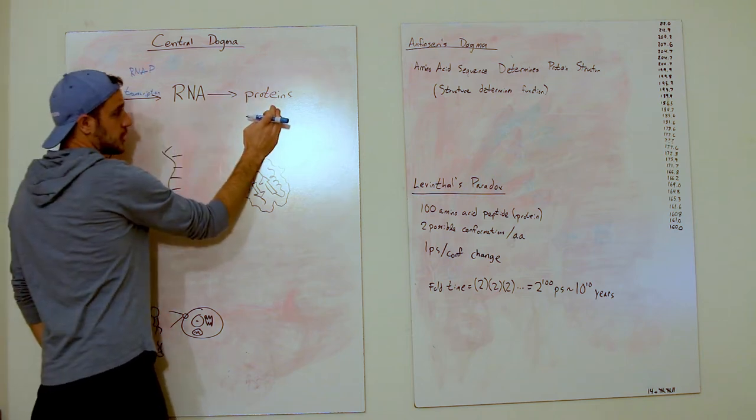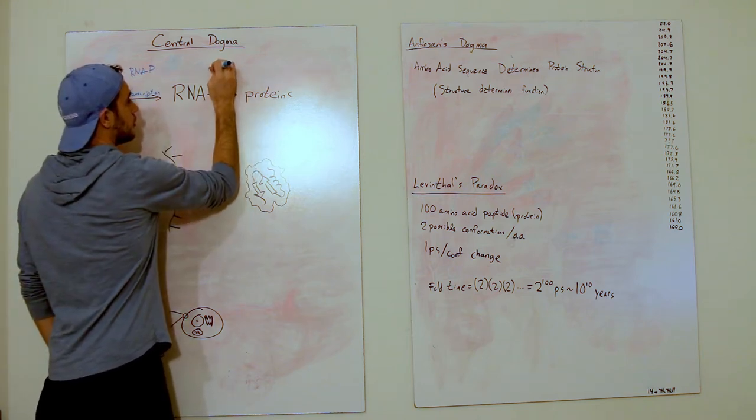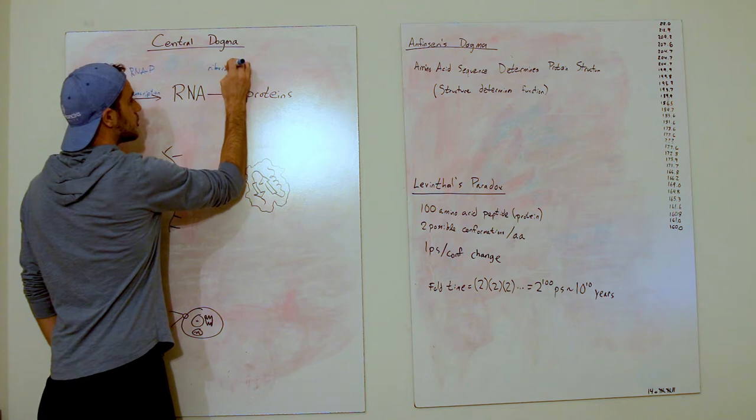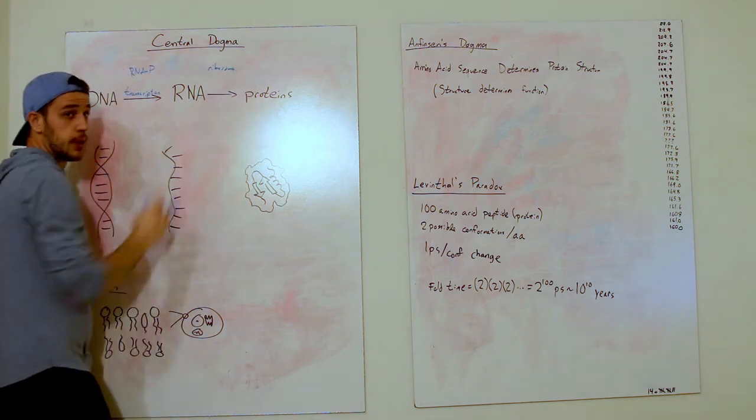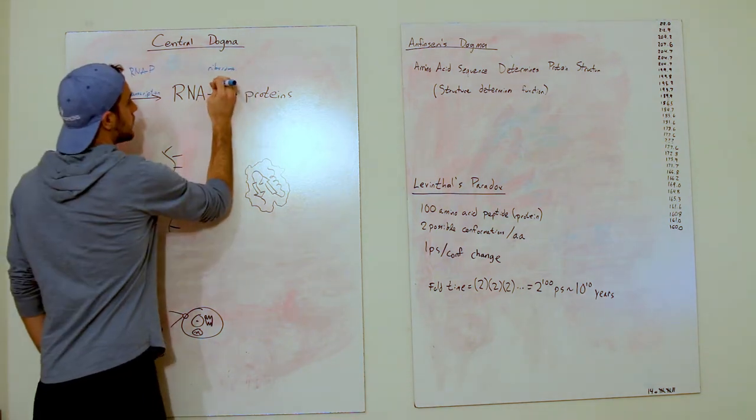And then RNA is translated into a protein by something called the ribosome, which is a complex of RNA and protein, actually. And that process is called translation.